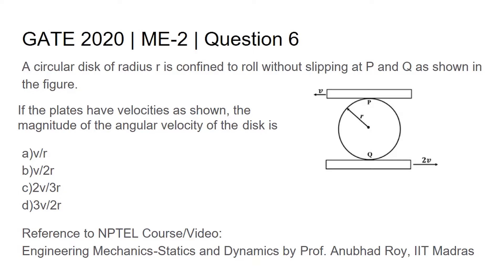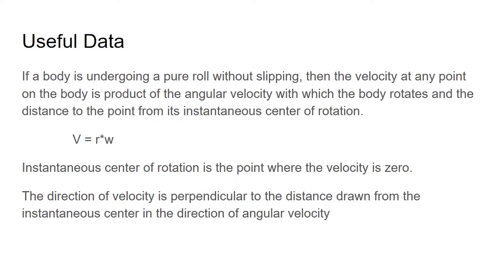We have to know about some basic concepts. If a body is undergoing pure roll without slipping, then the velocity at any point on the body is the product of angular velocity and the distance to the point from its instantaneous center of rotation: v equals r omega. The instantaneous center of rotation is the point where the velocity is zero. The direction of velocity is perpendicular to the distance drawn from the instantaneous center, in the direction of angular velocity.